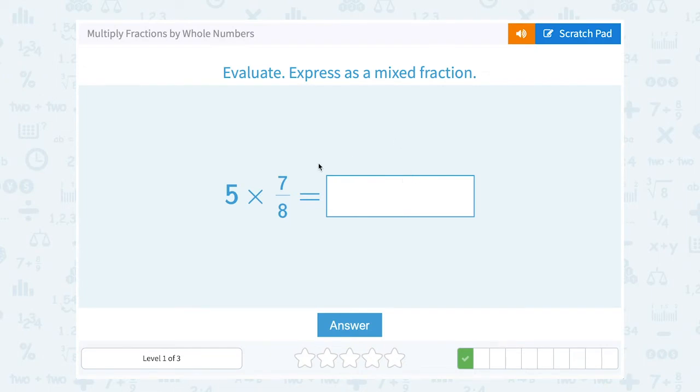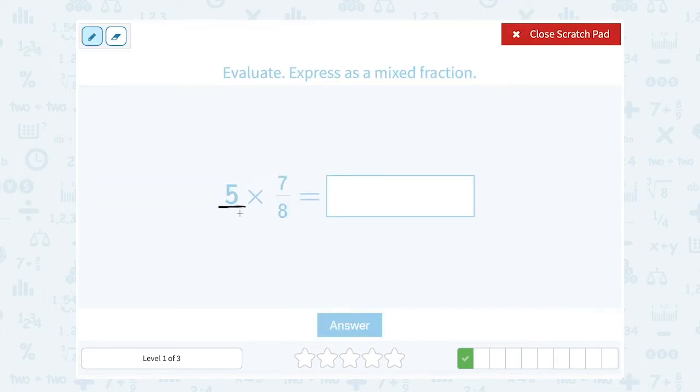We want to evaluate 5 times 7 over 8. Just like before, I want to write my whole number as a fraction. So I'm going to think of that as 5 over 1 times 7 over 8. When you're multiplying with fractions, you multiply straight across the numerator and straight across the denominator. On the top or the numerator, 5 times 7 gives me 35. And on the bottom or denominator, 1 times 8 gives me 8.